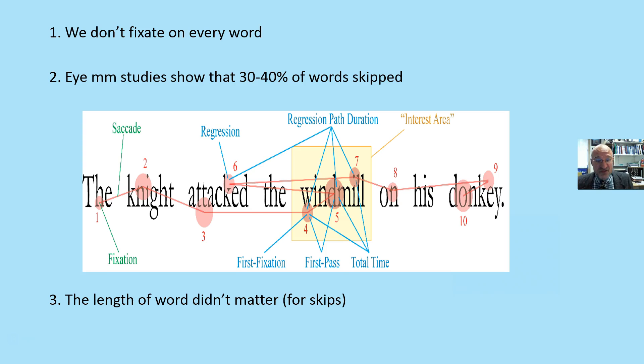Eye movement studies show that 30 to 40 percent of the words are skipped. We don't fixate, and we can only perceive a word when we stop on it, perceive it in the literal sense of the word. Our brain fills in the blanks. It fools us into thinking that we are perceiving every word.